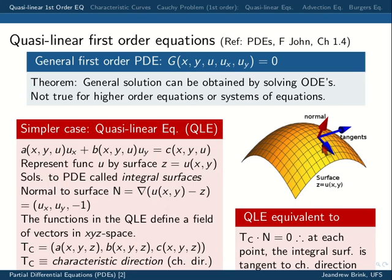You have this idea that you can represent the solution to the quasi-linear equation as a surface. People call this surface the integral surface. Like any surface, you can look at its geometric properties — it has a normal, and we worked out that the normal is just the gradient of a function describing the surface, namely u_x, u_y, and -1. Any surface also has two linearly independent tangents.